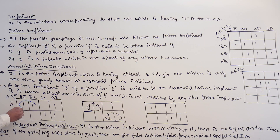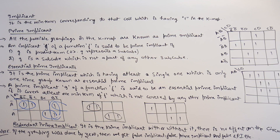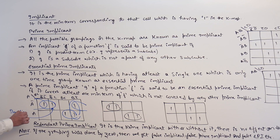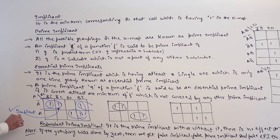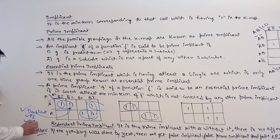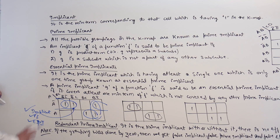In this k-map, we can make a subcube like this, we can make a subcube like this, we can make a subcube like this, as well as we can also make a subcube like this. Now, this subcube — this subcube — it is an implicant. It is a prime implicant as well as it is an essential prime implicant. Why? Because first of all, it is an implicant because it is a subcube.